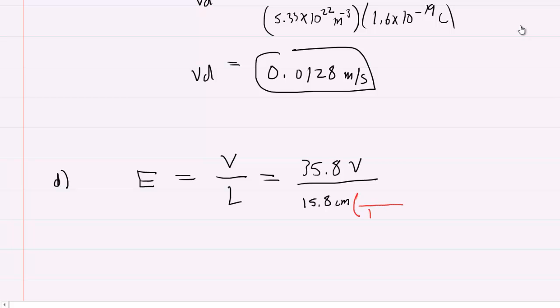Let's do a similar conversion, although this time we're not squaring it. 1 centimeter is 10 to the minus 2 meters, so those centimeters will cancel out. If you punch that into your calculator carefully, you should end up with about 227.